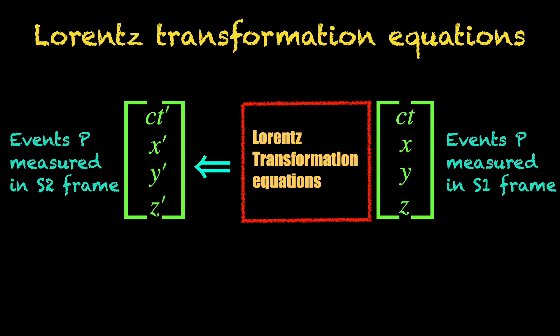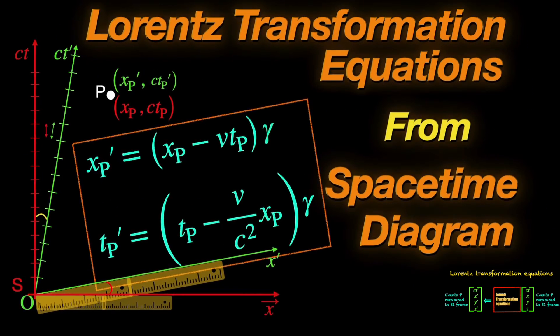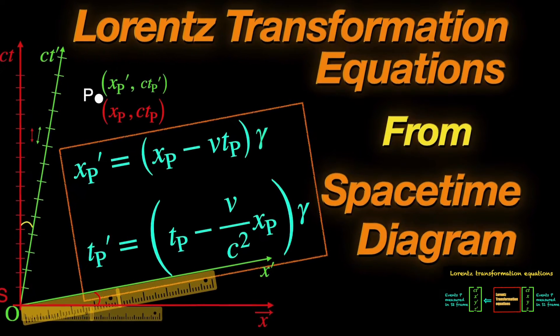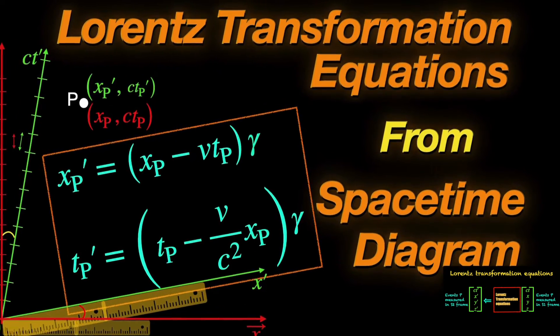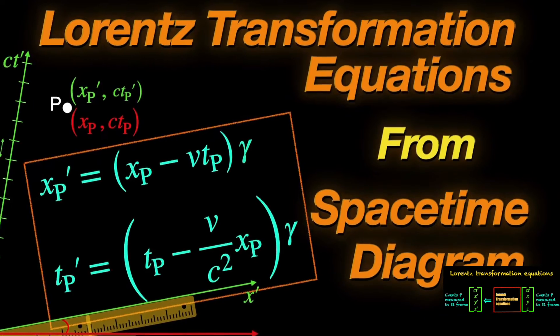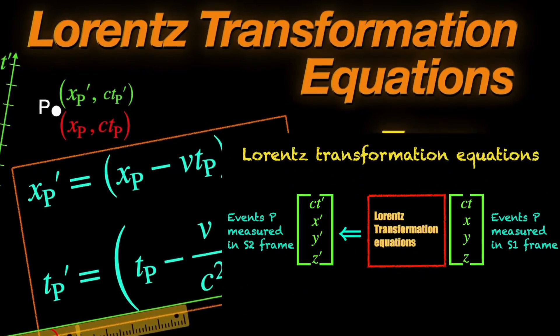In an earlier video in this channel, we have derived the Lorentz transformation equations directly from the postulates of relativity using a spacetime diagram approach. It's a bit different than the usual algebraic stuff done in textbooks because, of course, we are physics next book, not a textbook. Link is in the description.